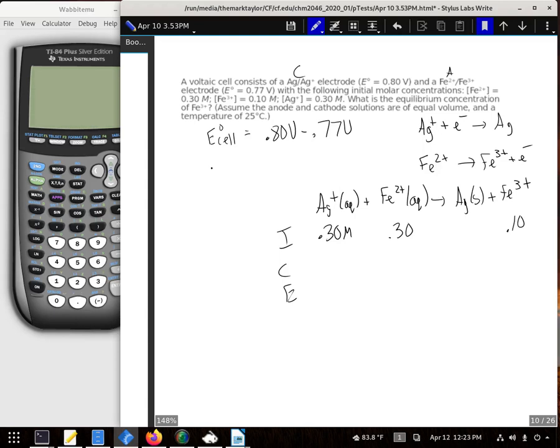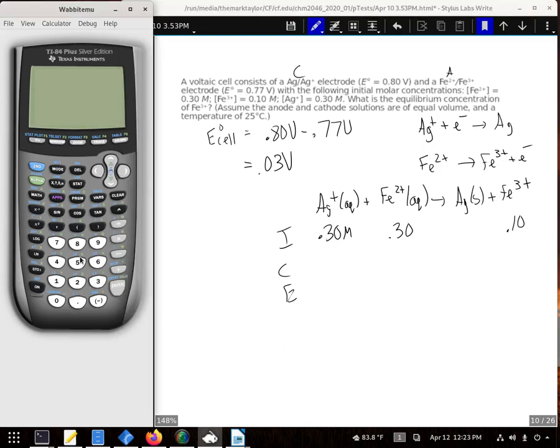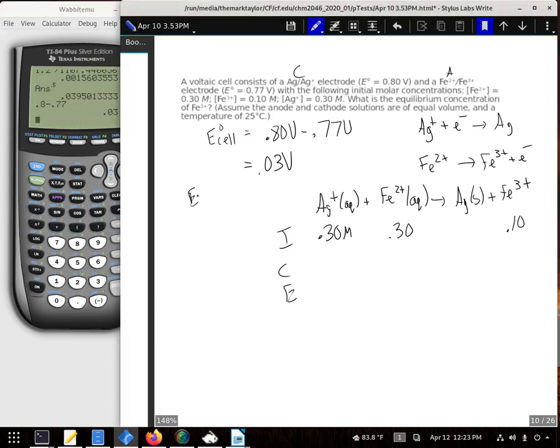Alright, also, my E° being 0.03 volts, 0.8 minus 0.77, we're going to turn that into a K using the E° equals RT over NF natural log of K.